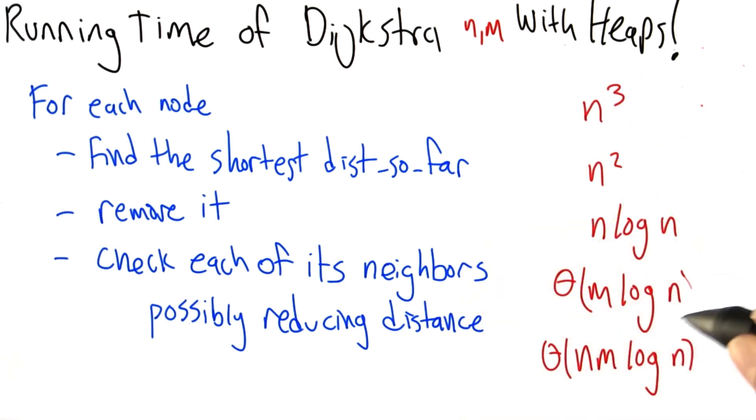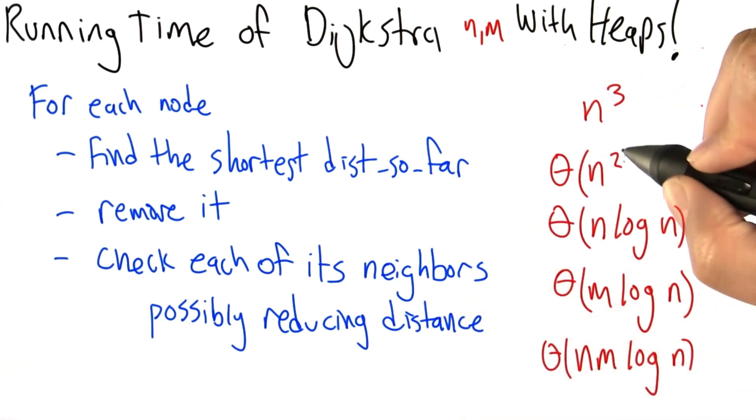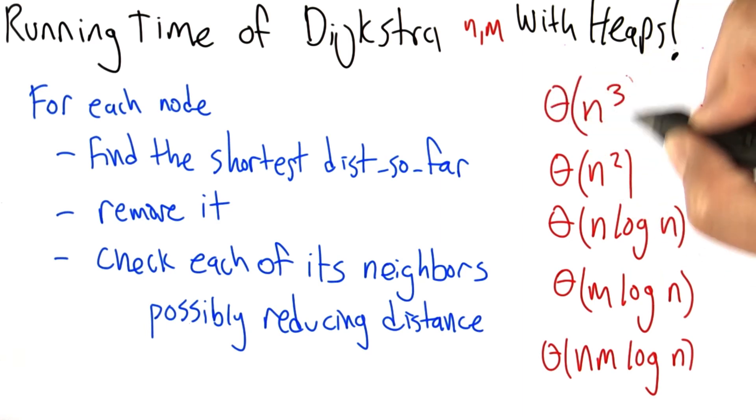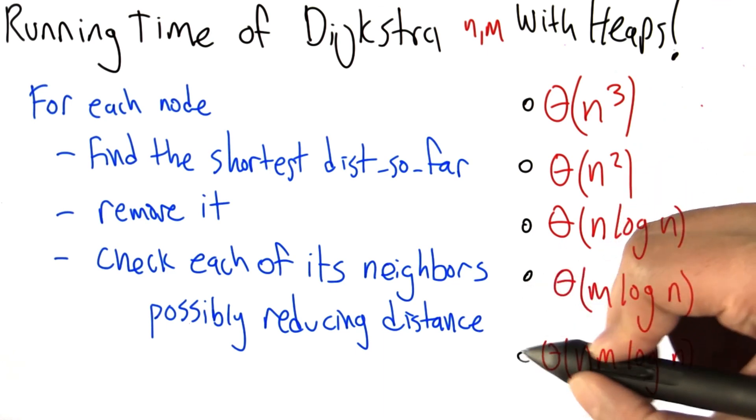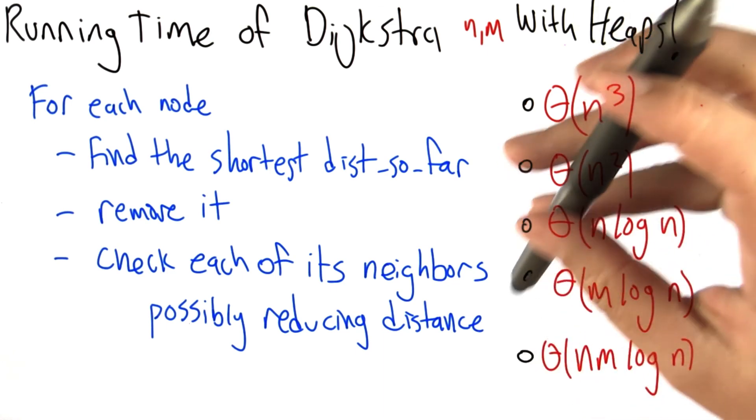But let's take a look at the running time, given that we can do this distance reduction operation in logarithmic time. So for each node, we find the shortest distance, and then for each node and each of its neighbors, that is to say for each edge, we possibly reduce its distance of a node.